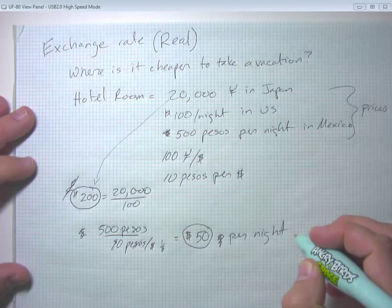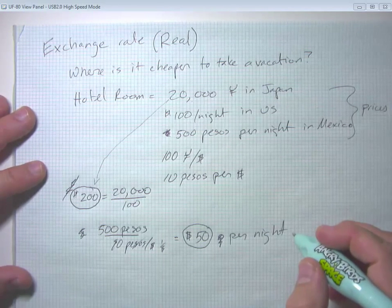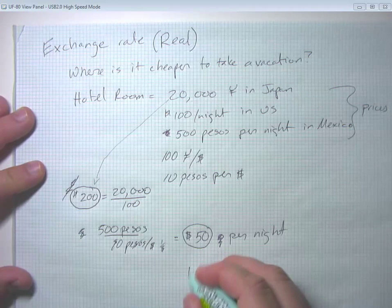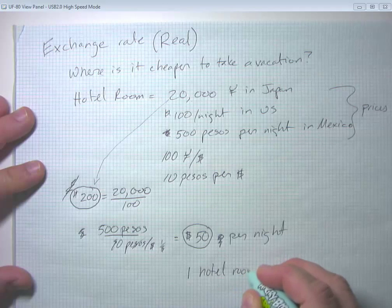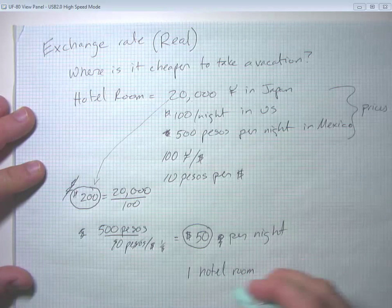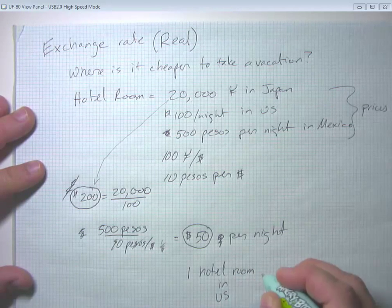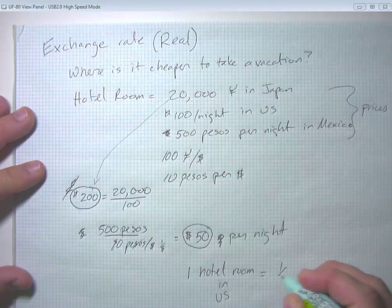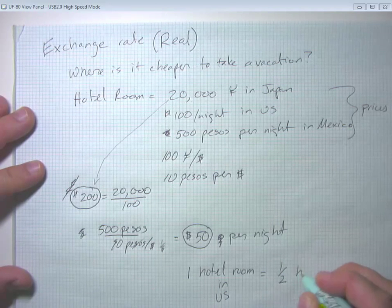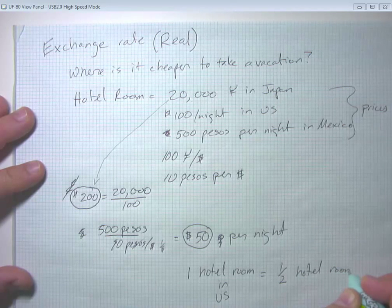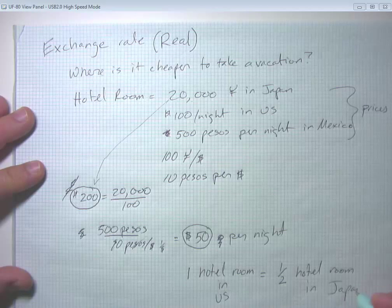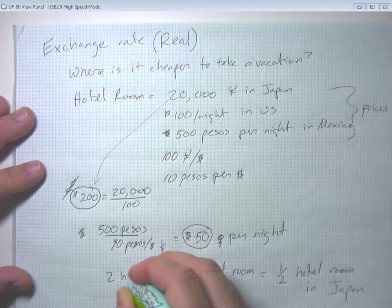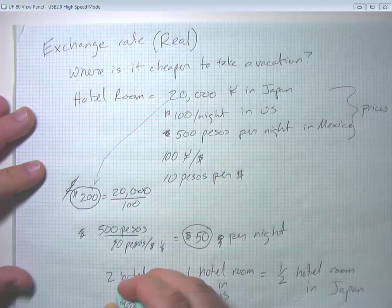So one way of looking at this is the real exchange rate is one hotel room or one night in a hotel room in the US. With that same amount of money, I could get half of a hotel room in Japan, excuse me. Or I could get two nights in a hotel room in Mexico.